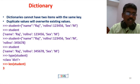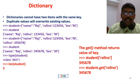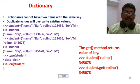Next is the get() method. The get() method returns the value of a specified key. For example: student.get('roll number') returns the value 3, 4, 5, 6, 7, 8.